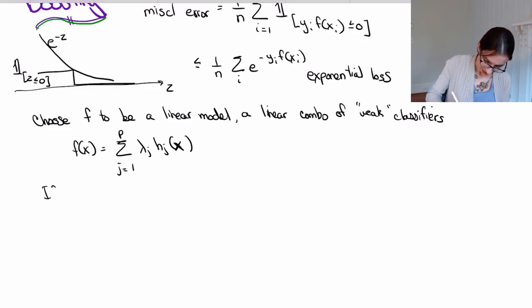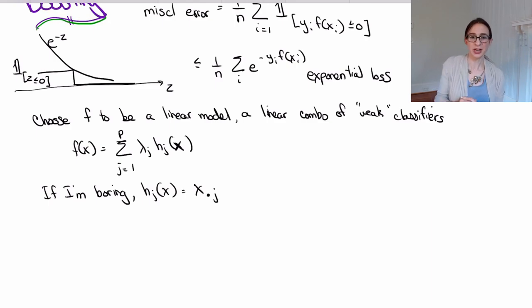So I'll write here, if I'm boring, if I'm boring, then the math gets interesting. If I'm boring, h j of x equals x dot j. So this dot is a placeholder. Usually I write xi for the ith training example, but now I want to indicate the jth feature. So I'm just leaving that placeholder so that when I write xi j, I mean the jth feature of data point i. So this here is the jth feature of x, whatever x is.